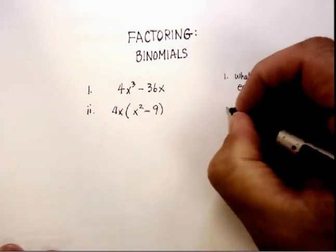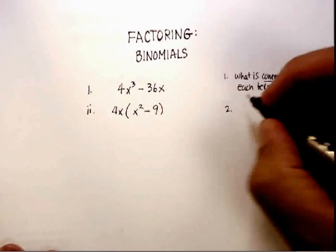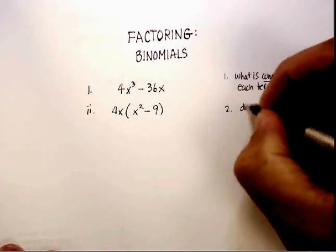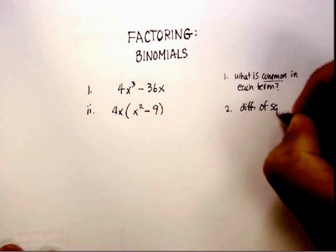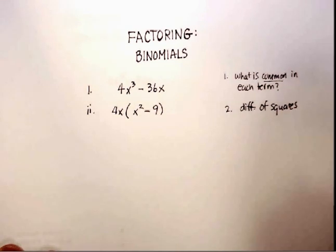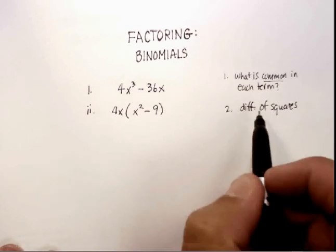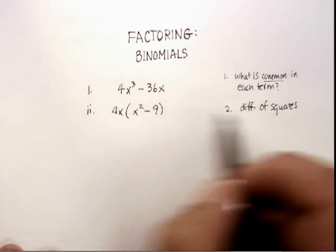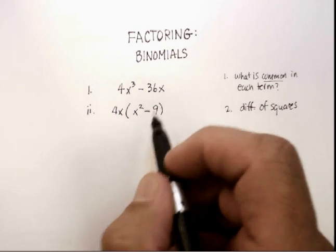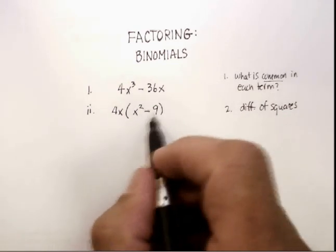The second thing you want to look for is what's called a difference of squares. Now what does that mean? A difference of squares—well, you'll notice that the word difference means a subtraction, squares means something that is just squared, something times itself.